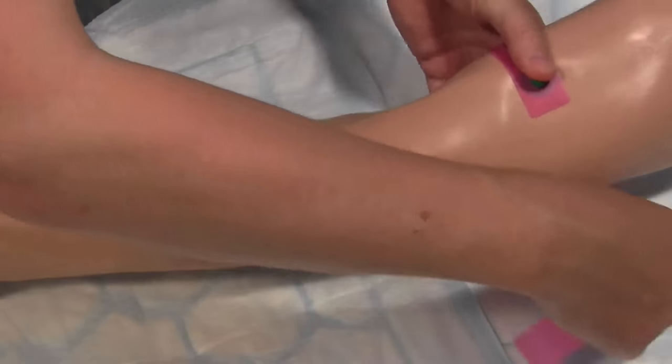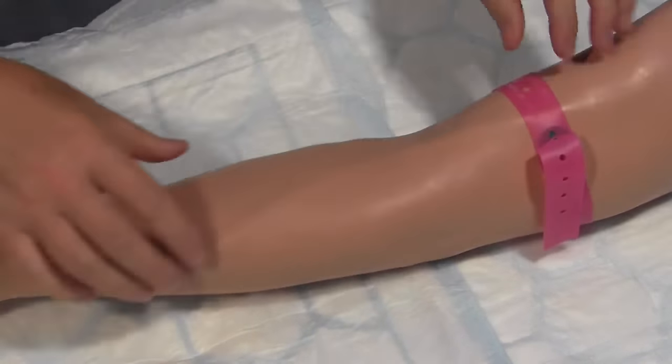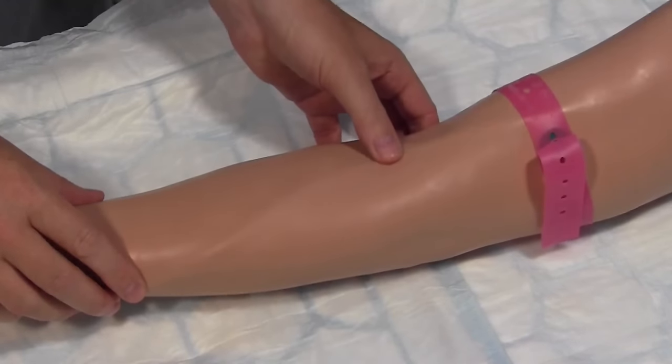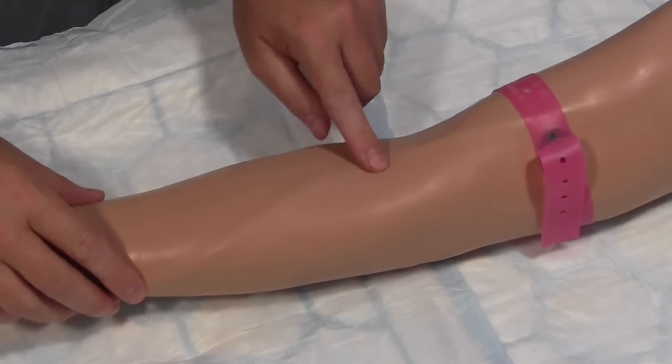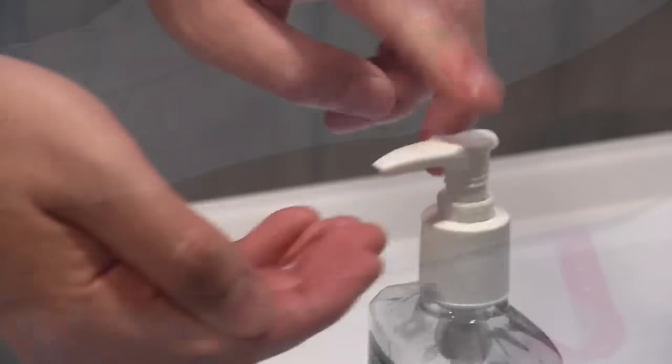Apply the tourniquet about a hand's breadth above the proposed puncture site. Select a nice visible bouncy vein. Release the tourniquet for the patient's comfort and to prevent damage to the blood cells.